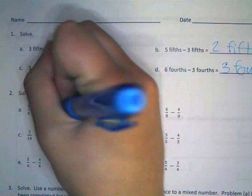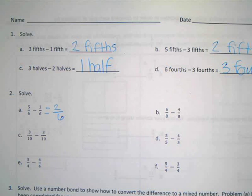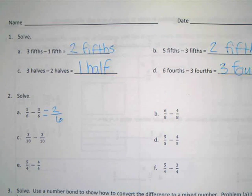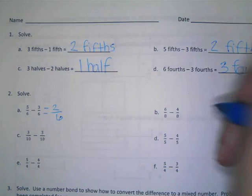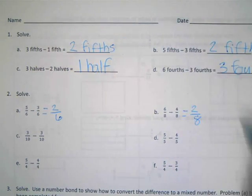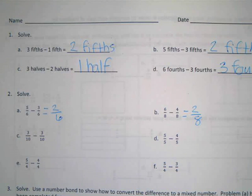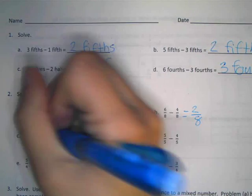If you get stuck, what can you do? A number line if you wanted to. Yeah. All right, six-eighths take away four-eighths. Two-eighths. Two-eighths. Ooh, what about this? What about C? Three-tenths take away three-tenths. Zero-tenths.